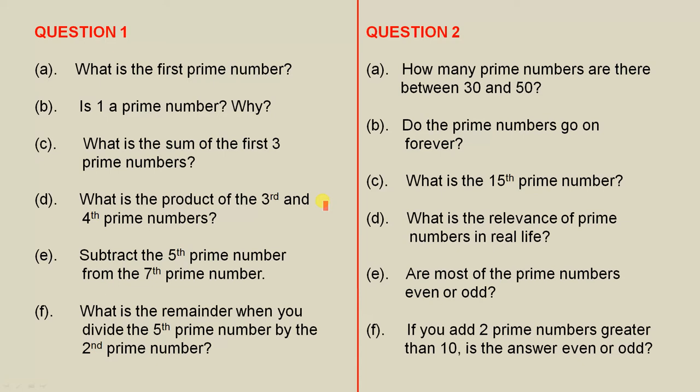What is the product of the third and fourth prime numbers? Subtract the fifth prime number from the seventh prime number. What is the remainder when you divide the fifth prime number by the second prime number?